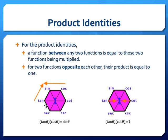The second way to find a product identity: when two functions are opposite each other on the hexagon, their product is equal to one. Tangent and cotangent are opposite each other on the hexagon, with the one in the middle, so tangent times cotangent is going to be equal to one. Those are two different methods for finding the product identities.